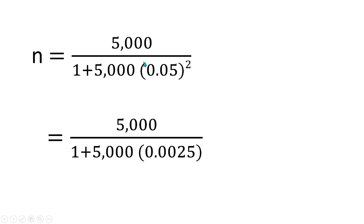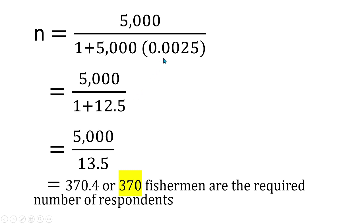What we do is square 0.05 by multiplying it by itself, which becomes 0.0025. After that, we multiply 0.0025 with 5,000, which equals 12.5. Then 12.5 plus 1 equals 13.5.